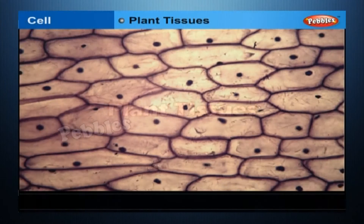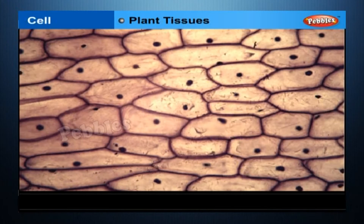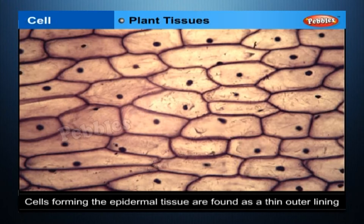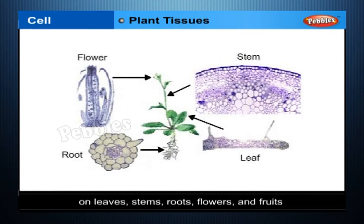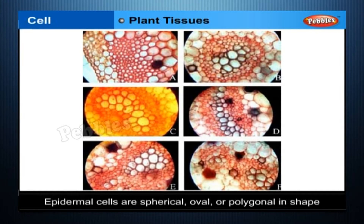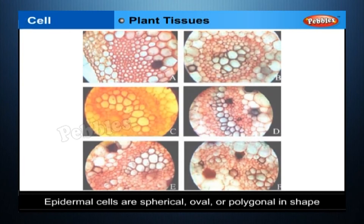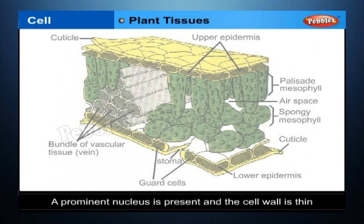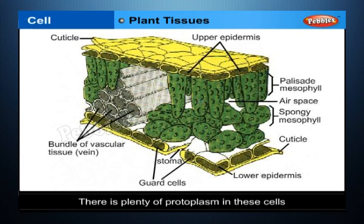Plant Tissues — Epidermal Tissue. Cells forming the epidermal tissue are found as a thin outer lining on leaves, stems, roots, flowers and fruits. Epidermal cells are spherical, oval or polygonal in shape. A prominent nucleus is present and the cell wall is thin. There is plenty of protoplasm in these cells.